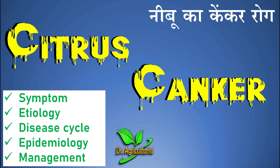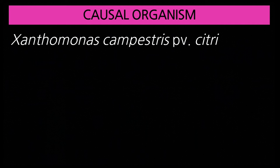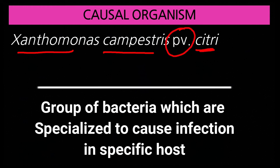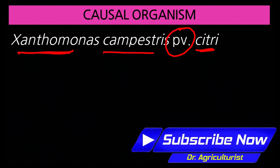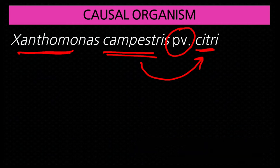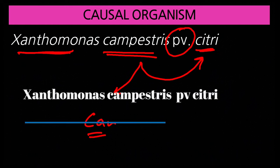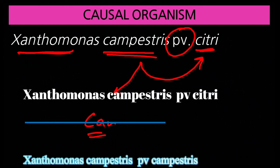Citrus canker is a bacterial disease. It is caused by the bacterium Xanthomonas campestris pathovar citri. The term 'pathovar' refers to a group of bacteria specialized to cause infection in a specific crop. Xanthomonas campestris pathovar campestris causes black rot of crucifers, while pathovar citri causes citrus canker. Both have the same morphology and structure — the only difference is the host they infect.